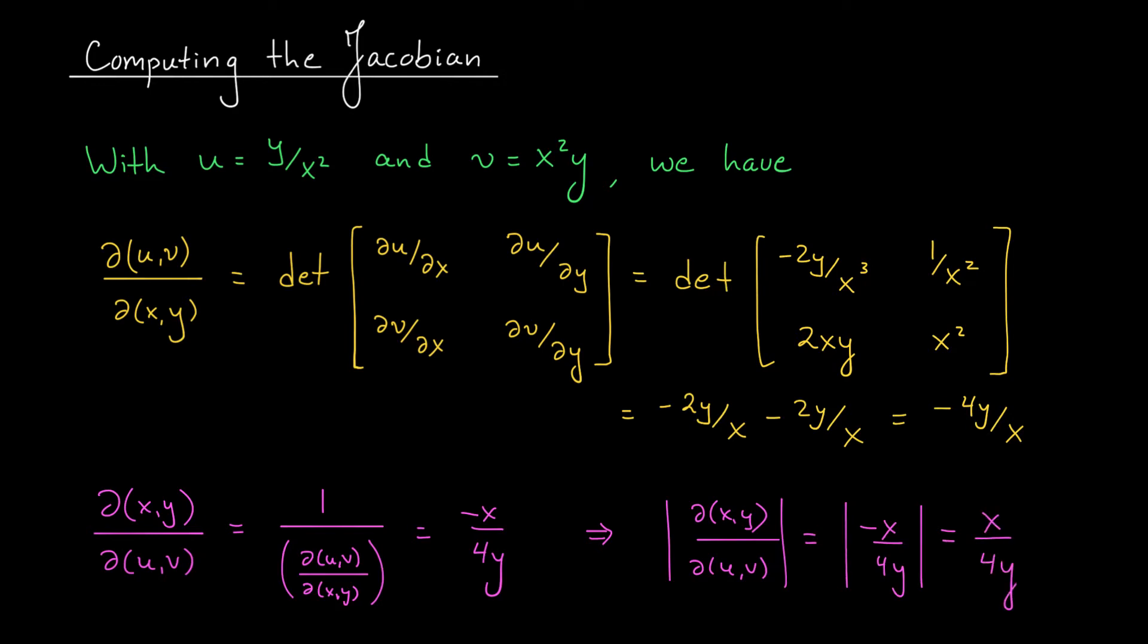Now this is actually kind of interesting. In our last couple examples, the Jacobian was a constant, right? But now, it's an expression depending on x and y. What this means is that the distortion in area caused by our transformation isn't uniform. There are certain areas of the plane where we experience more or less distortion.